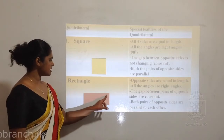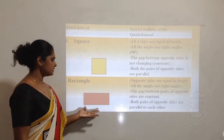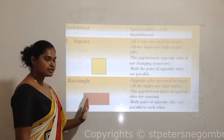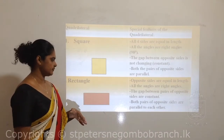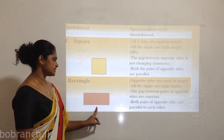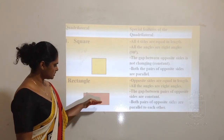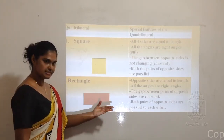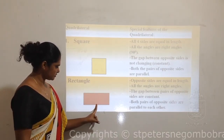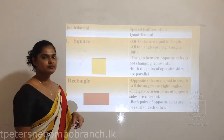The rectangle also has four angles and all four angles are right angles - their magnitude is 90 degrees. All four angles are equal in their magnitude. The gap between the opposite sides is constant, meaning both pairs of opposite sides are parallel to each other.